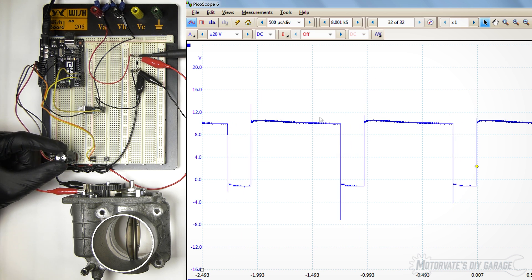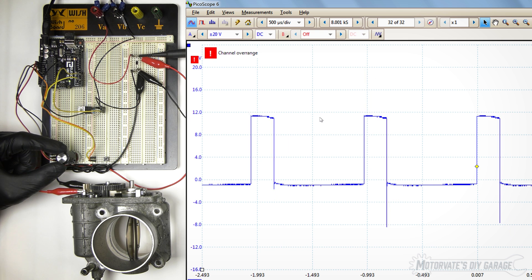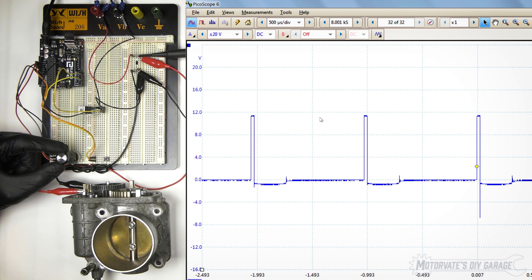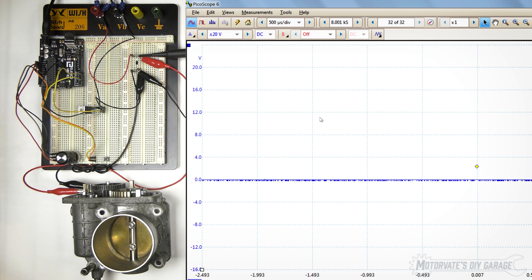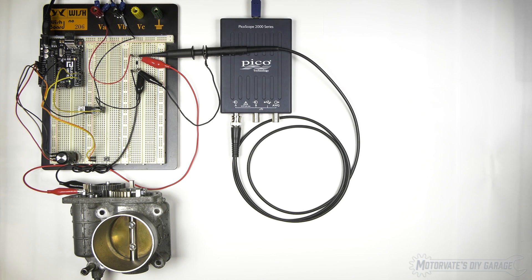Let me now slowly close it. We can see our duty cycle slowly decreasing. Our on time is slowly decreasing. Until we are right there. And that is the pulse width modulated signal that goes to a typical throttle body to control how much it opens.